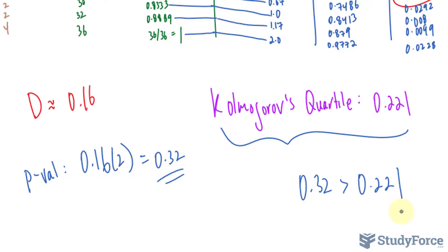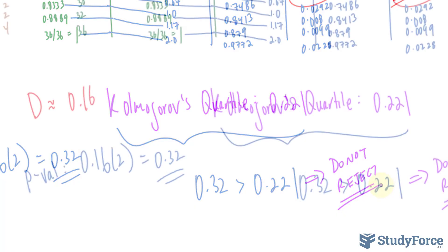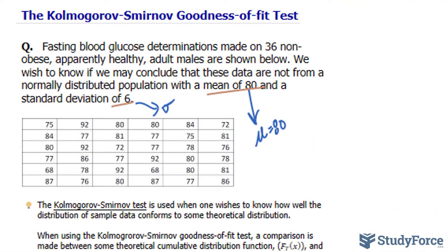If your p-value is greater than 0.221, that means we do not reject the null hypothesis because we do not have sufficient evidence at 0.05 significance level to conclude otherwise. So to say that again, we have insufficient evidence at 0.05 significance level to conclude the sample comes from a different distribution. And so the sample may have come from the specified distribution that was given in the question being one that's normally distributed. And so there you have it. That is how to perform the Kolmogorov-Smirnov goodness of fit test.